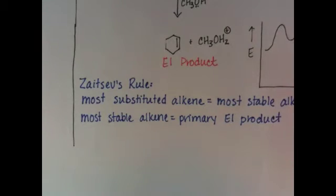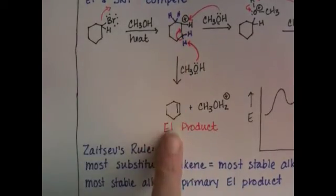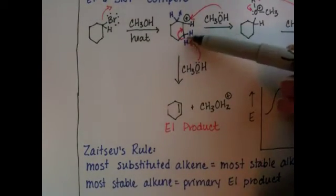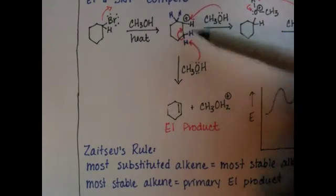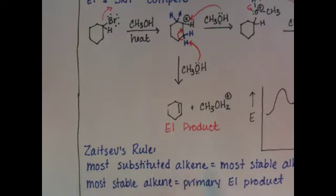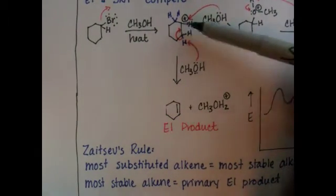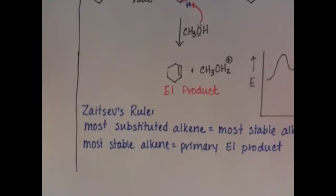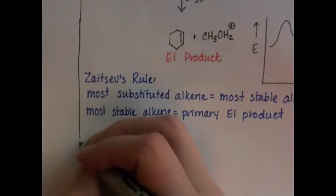So this is going to help us when we are trying to predict, in this step right here, for example, which hydrogen we should abstract. Should it be one of these hydrogens or one of these hydrogens, and we're trying to decide which alkene we should form, we use Zaitsev's Rule to help us predict. It doesn't apply to this example because this molecule is symmetrical and really simple, but in the next two examples that we do, we're going to use Zaitsev's Rule. So here is an overview, like a picture of what Zaitsev's Rule looks like.